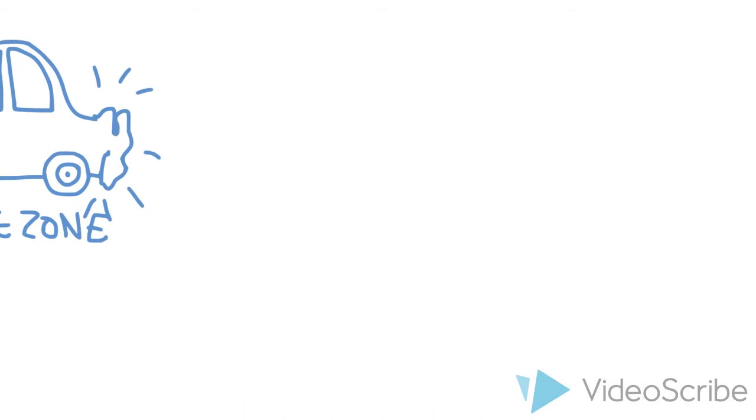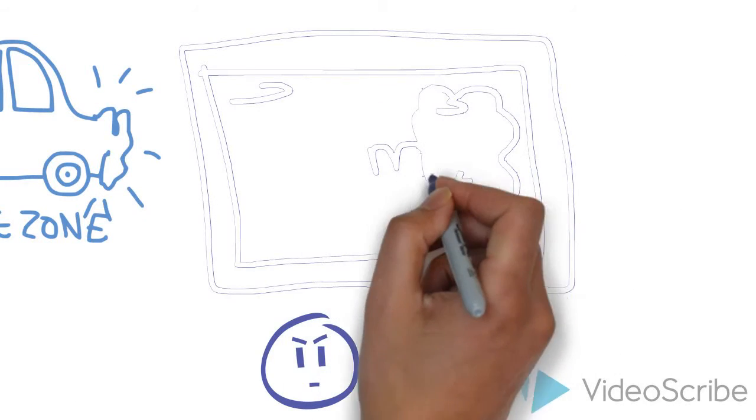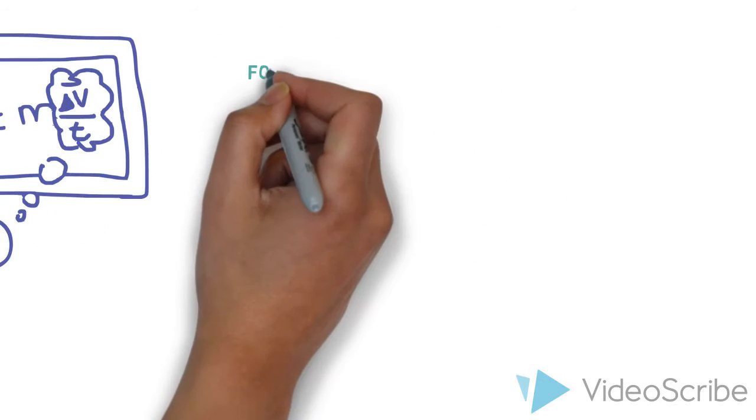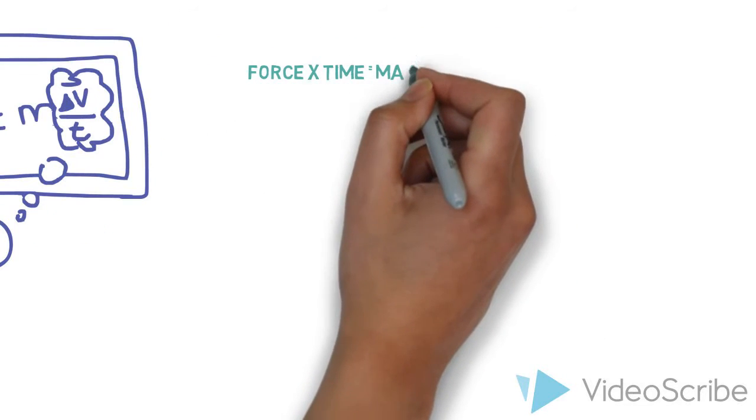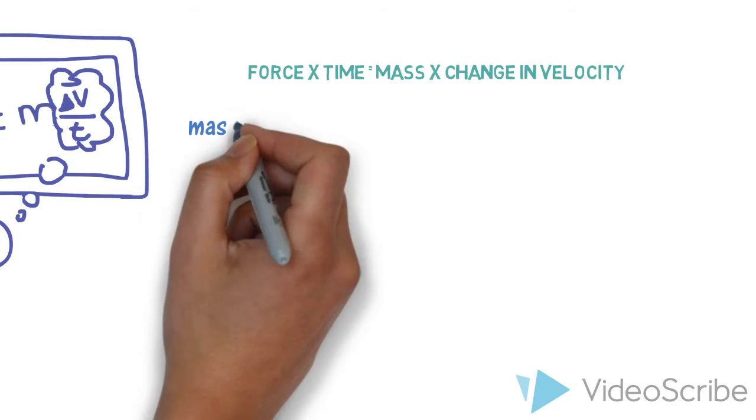The Physics Behind Crumple Zones. Let's start with Newton's second law of motion. Force equals mass times acceleration. We also know that acceleration equals the change in velocity over time. This means that force times time equals mass times the change in velocity, or momentum.